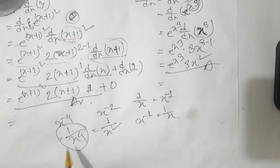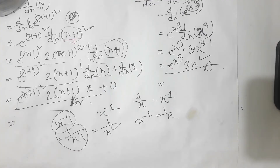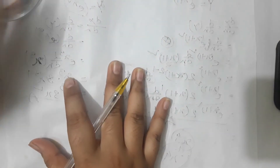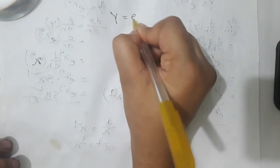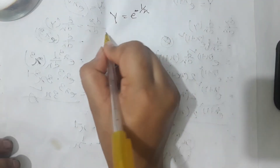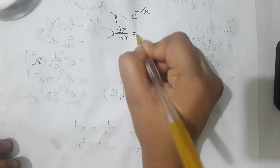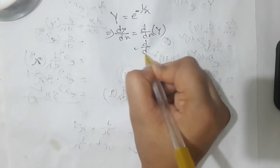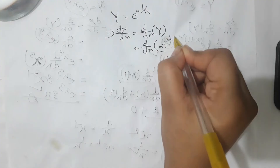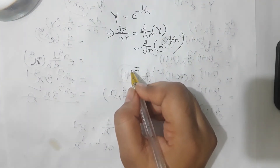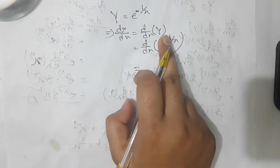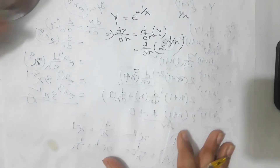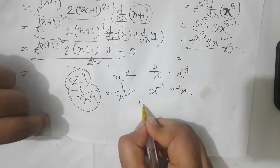x to the power minus 4. y equal to e to the power minus 1 by x. y equal to minus 1 by x. So it's 1 by x.